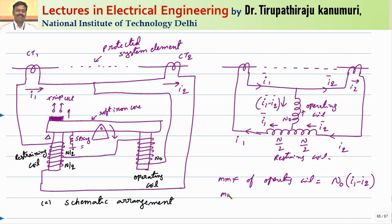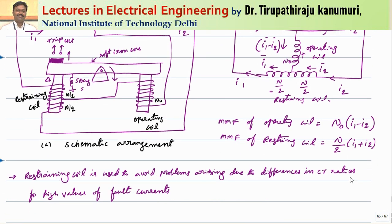The MMF of the operating coil = N0 × (I1 − I2). The MMF of the restraining coil = (N/2) × I1 + (N/2) × I2 = (N/2) × (I1 + I2). Additionally, the spring also contributes to the restraining force. The restraining coil is used to avoid problems arising from differences in CT ratios, particularly at high values of fault currents.